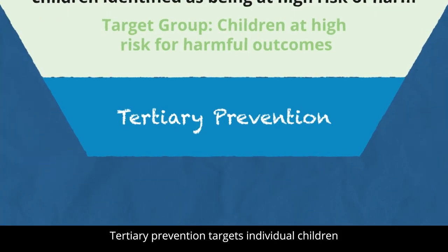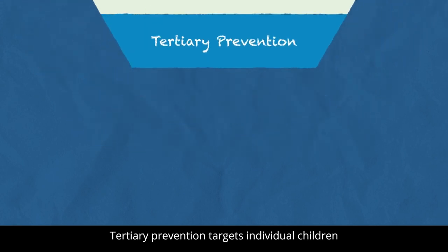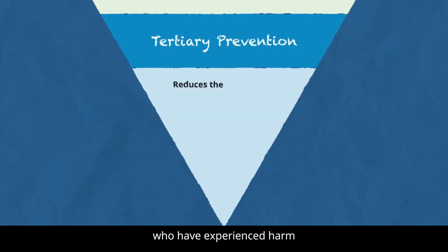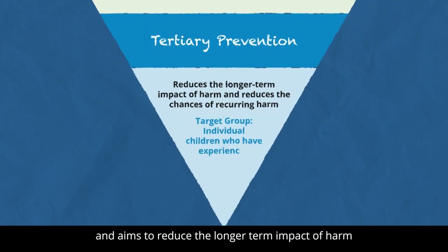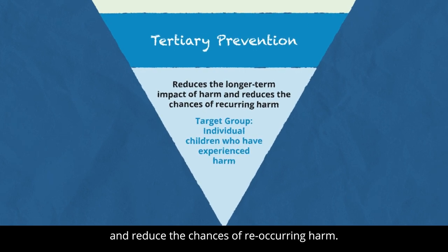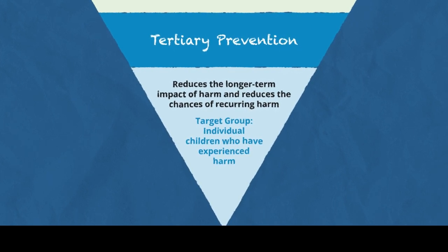Tertiary Prevention targets individual children who have experienced harm and aims to reduce the longer-term impact of harm and reduce the chances of recurring harm.